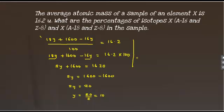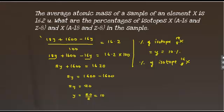Therefore, the percentage of isotope x-18 is equal to y, which is 10 percent. The percentage of isotope x-16 is equal to 100 minus y, that equals 100 minus 10, which is 90 percent.